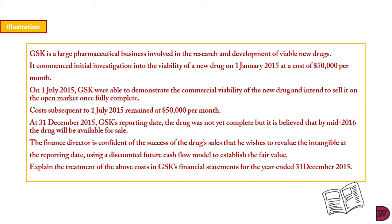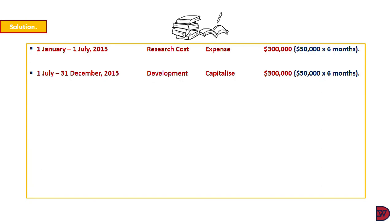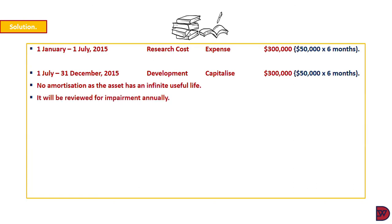We are to explain the treatment of the above costs in GSK's financial statement for the year ended 31st December 2015. For the cost incurred within the period of 1st January to 1st July 2015, it will be considered as a research cost and expensed to the profit or loss account — that will be $300,000, which is $50,000 each month from January to June. Then subsequently from July to 31st December, it was clearly at the development phase, so we capitalize this expenditure, which will also give us $300,000 from July to December. Here we are not going to amortize the development cost or the asset because it has not yet reached commercial production — it will be reviewed for impairment annually. The fair value of the asset, as the finance manager wanted to do, cannot be determined because there is no active market.